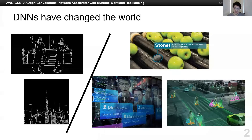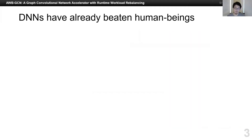Everyone knows that DNN has changed the world. In the old days, researchers were working on edge detection and age detection for many years. However, in the past decades, with the help of DNNs, we started to work on much more fancy tasks. For example, we already make cars drive themselves now. And DNNs have already beaten human beings in many fields, especially computer vision.